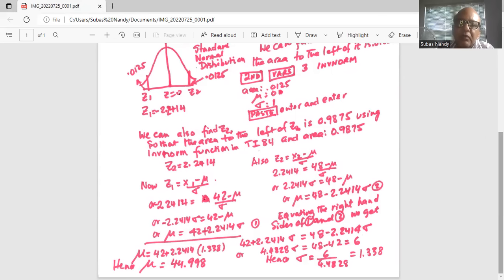So we are given two numbers in the areas to the left of one number, to the right of one number. So we converted them to a standard normal curve and found the value of the corresponding Z values.